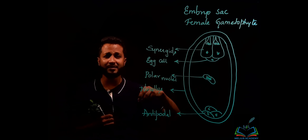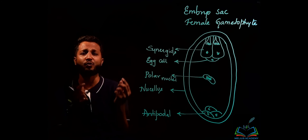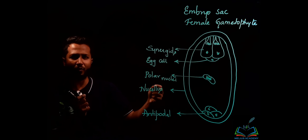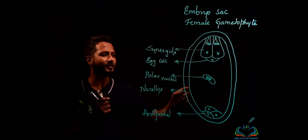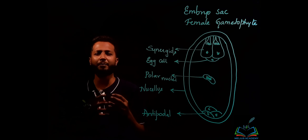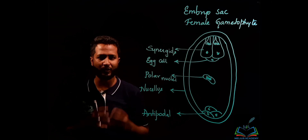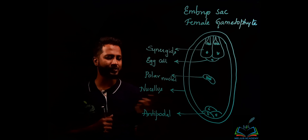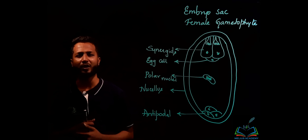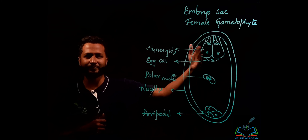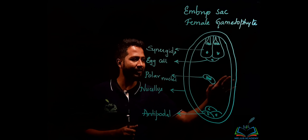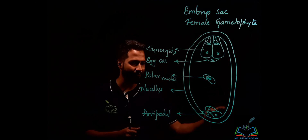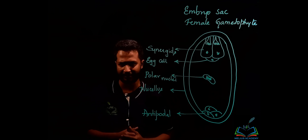Secondly, we have the egg cell. This is the female cell which will fuse with the male nuclei to form a zygote, which will develop into an embryo and that will form the seed. Then, polar nuclei are responsible for development of the endosperm — endosperm formation is a property of polar nuclei. Nucellus is the nutritive tissue of the developing embryo sac. Finally, antipodal cells extract nucellar nutrition and give it to the embryo sac, pushing it in from outside.